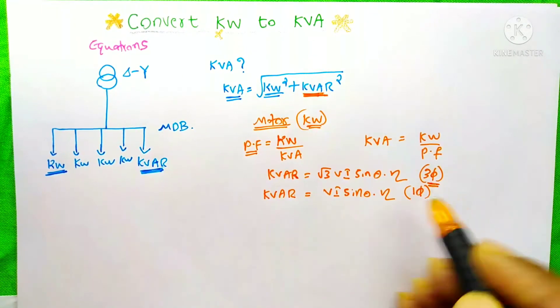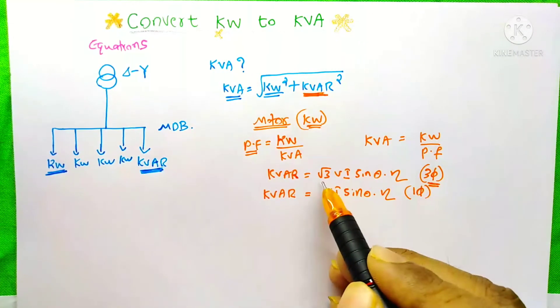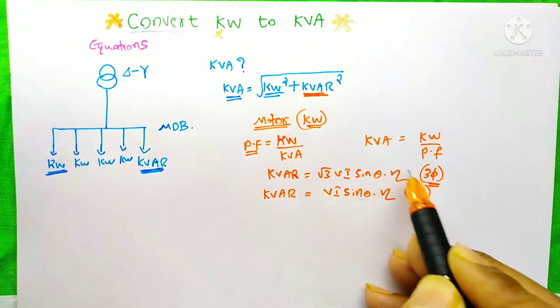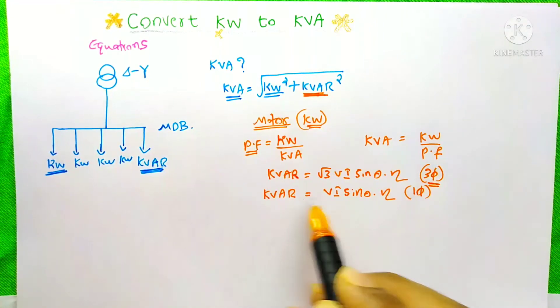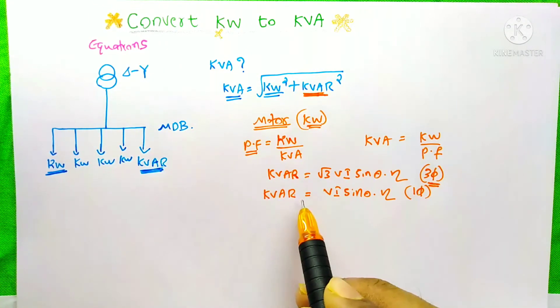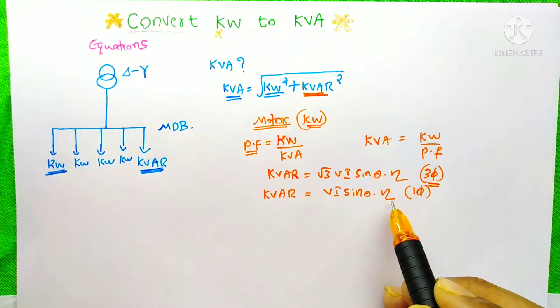For the three phase, we can find this kVAR by using this equation: root 3 V I sine theta times efficiency. And for the single phase, the equation is kVAR equals V I sine theta times efficiency.